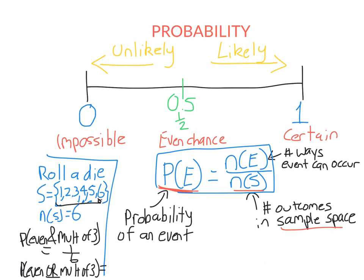Now I'm going to look at the probability I roll a number that's even OR a multiple of 3. We have to make sure we know the difference between 'and' and 'or.' When I say even OR a multiple of 3, I need to include all the even numbers and all the multiples of 3. So 'even or multiple of 3' means it's either even, a multiple of 3, or both. I've circled 4 numbers, so there are 4 ways it can occur out of 6 — which you can write as 2 over 3, or 0.6 recurring.